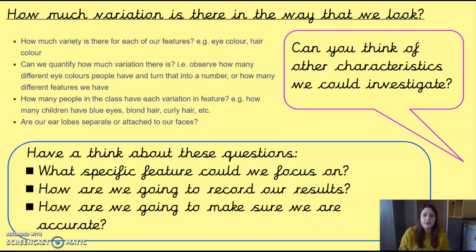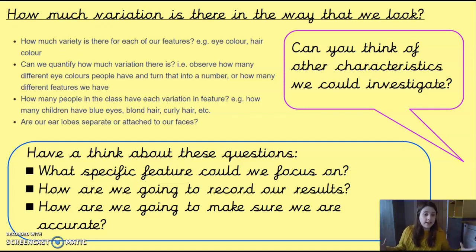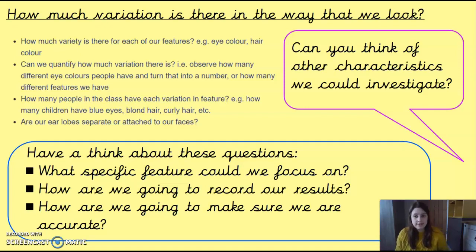We're going to use that to lead into our investigation. Our question is: how much variation is there in the way that we look? Variation is how much difference there is. This is why the science questionnaire had a lot of seemingly random questions — because we are looking at the variety in our Year 6 classes. We're keeping the ages the same by looking at Year 6. How many different eye colours are there in our two classes? How many hair colours? How many different features do we have?